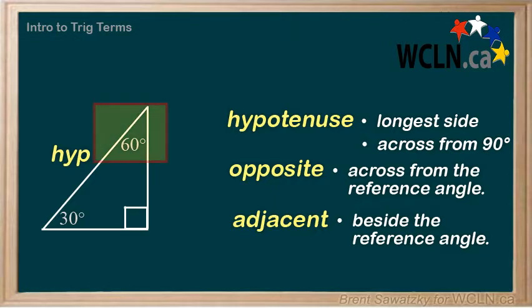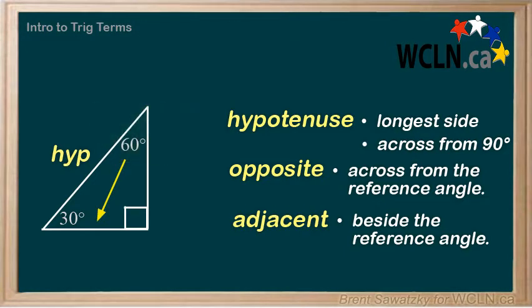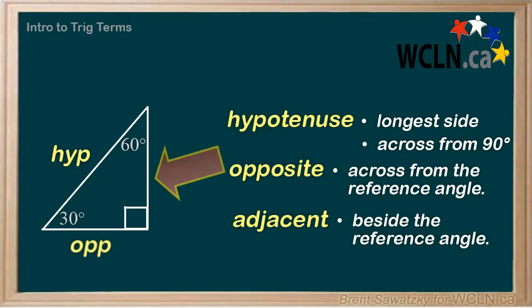On the other hand, if we were using this angle as a reference — the 60 degrees — then this side would be opposite, across the triangle from our reference angle. And this side would now be the adjacent side, beside the angle of reference.